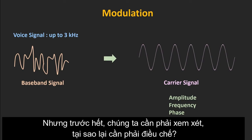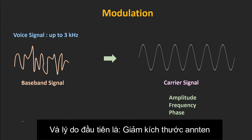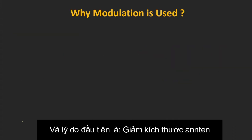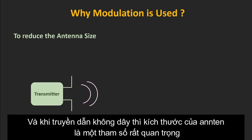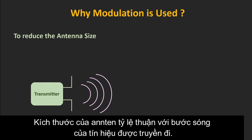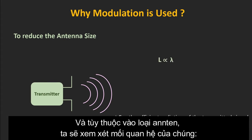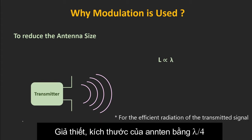Before that, let's see why modulation is required. The first reason to use modulation is to reduce the antenna size. When the signal is transmitted wirelessly, the size of the antenna is a very important parameter. The size of the antenna is proportional to the wavelength of the transmitted signal. Depending on the type of the antenna, it is a fraction of the transmitted wavelength — let's say the size of the antenna is equal to λ/4.